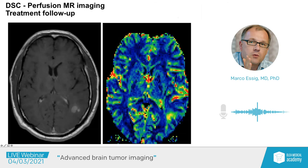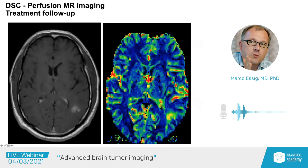Here is another scenario: a patient with a previous low-grade astrocytoma now showing a new enhancing area. The question is: is this treatment response, treatment-related change, or malignant transformation of the initially low-grade tumor? We performed perfusion imaging and saw high blood volume in that area — very indicative that this is tumor-related, not treatment-related, with malignant transformation confirmed.